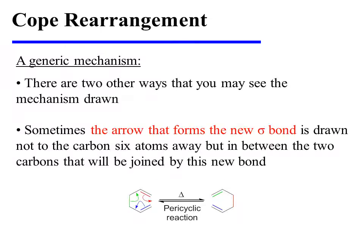There are two other ways that you may see the mechanism drawn. Sometimes, the arrow that forms the new sigma-bond is drawn not to the carbon six atoms away, but in between the two carbons that will be joined by the new sigma-bond.